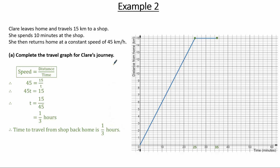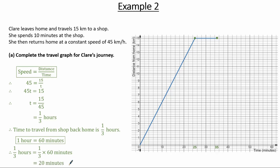The time is given in minutes on the horizontal axis. She leaves the shop at minute 35 and it takes her 20 minutes to get back home, so she arrives home at minute 55. This point represents when she's back home, and to complete the travel graph we join the shop departure point to the home arrival point.